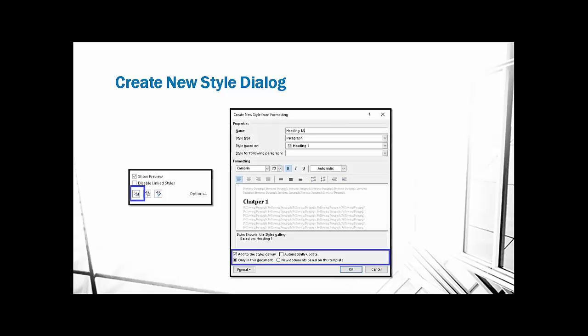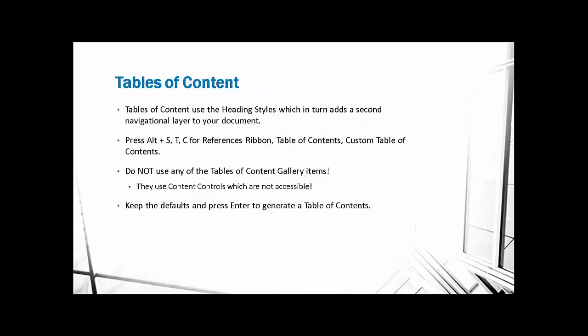The two radio buttons at the bottom of the Modify or Create New Style dialog that you need to consider are: apply changes to this document only, or to new documents based on the template. If you're working on a template, choose 'New documents based on the template' so that style is available whenever you use it. There is also a way to import and export styles from one document to another — that information is in the session handout.